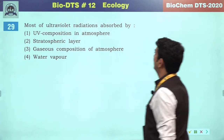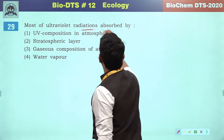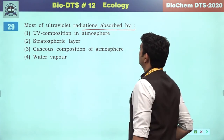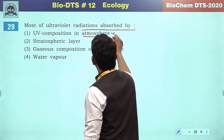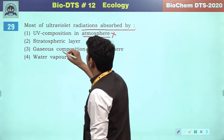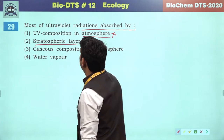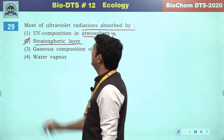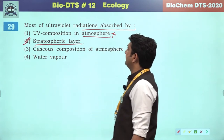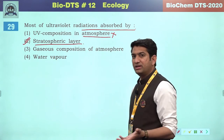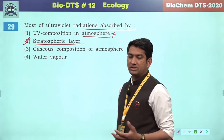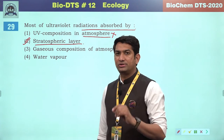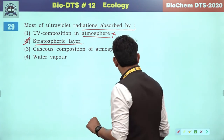Most ultraviolet radiations are absorbed by UV composition in the atmosphere — this is incorrect. The stratospheric layer absorbs most ultraviolet radiation. UVB and UVC are the most harmful.